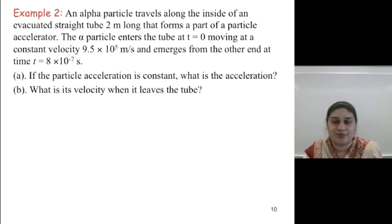Example 2. An alpha particle travels along the inside of an evacuated straight tube, 2 meters long, that forms a part of the particle accelerator. The alpha particle enters the tube at t equals 0...